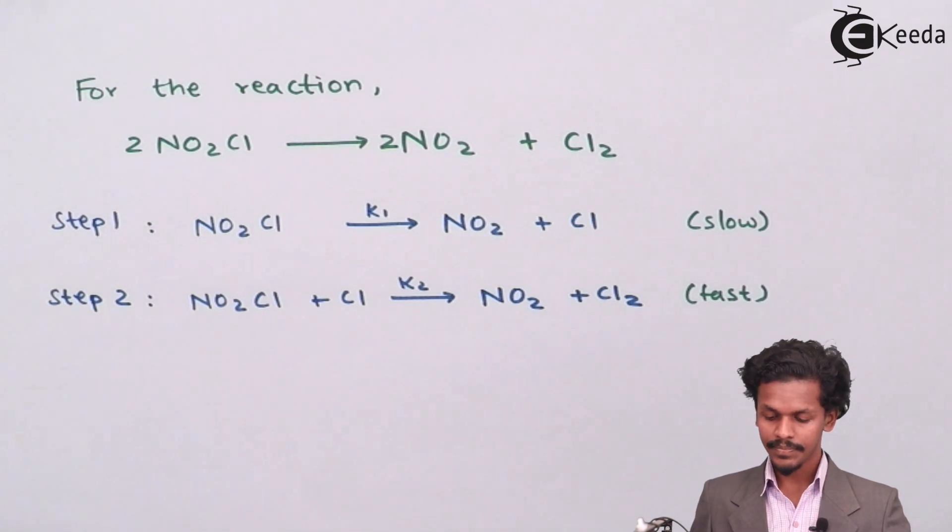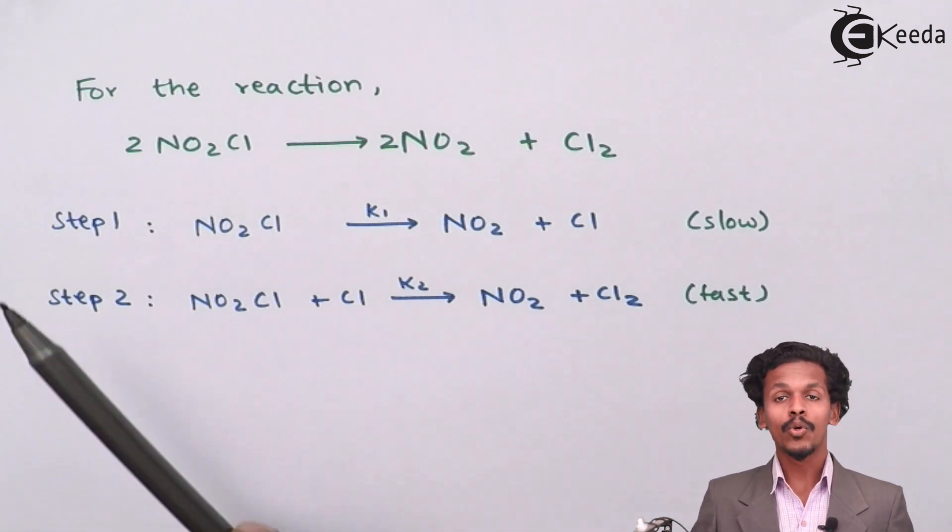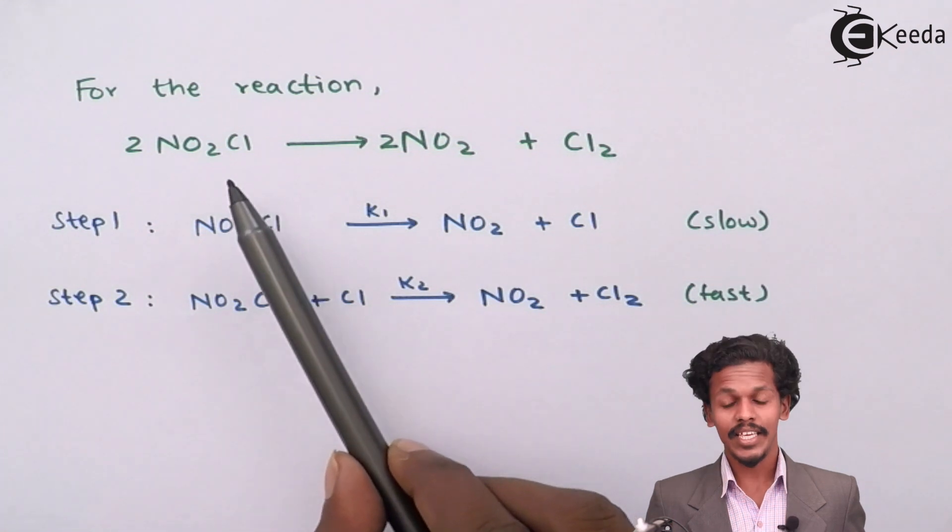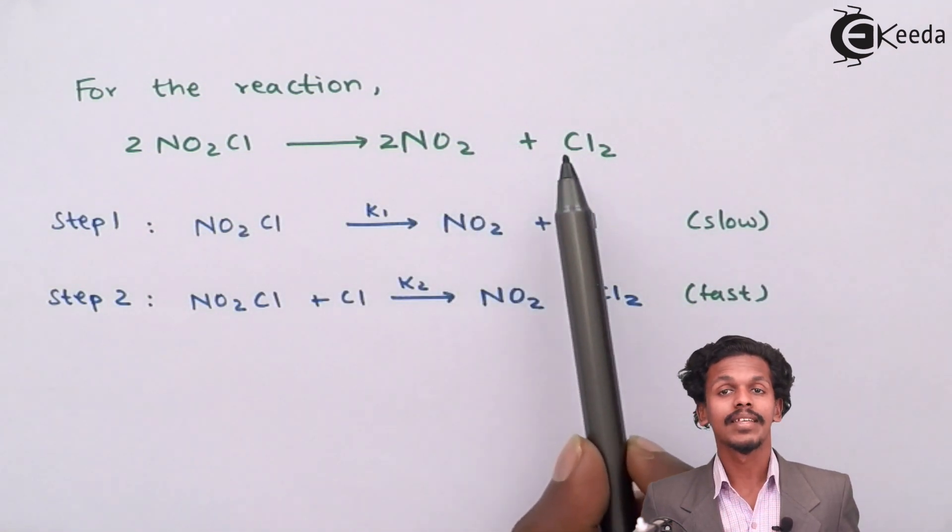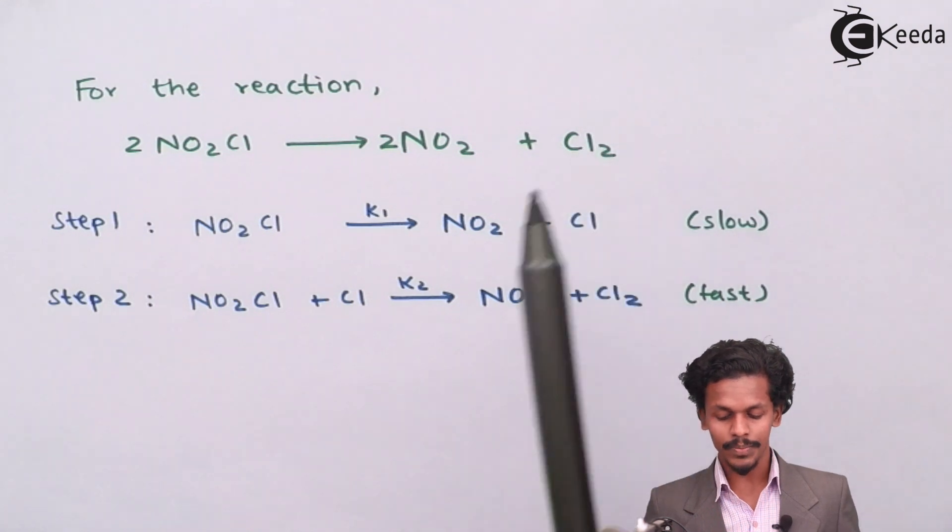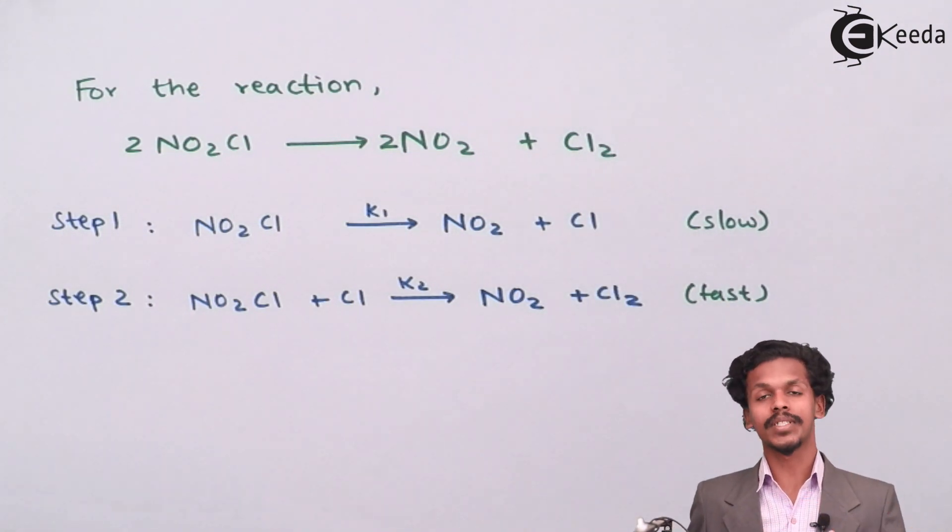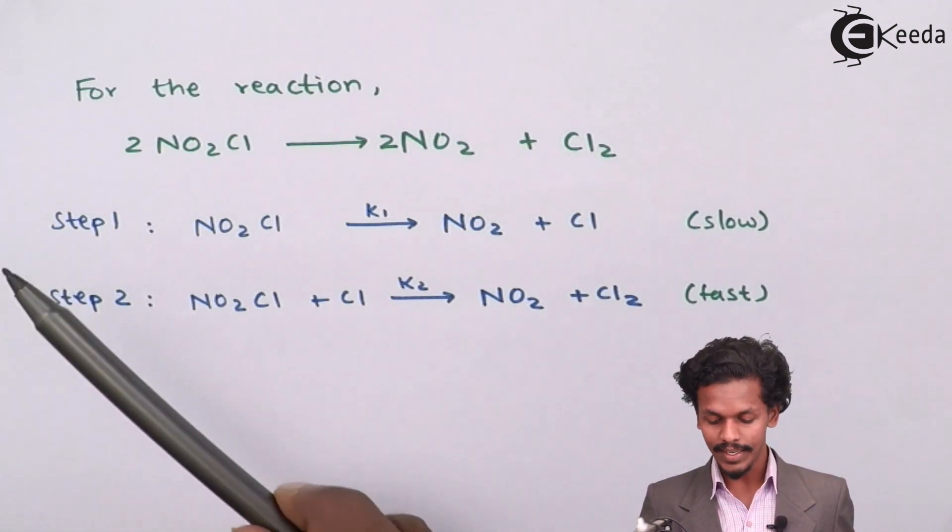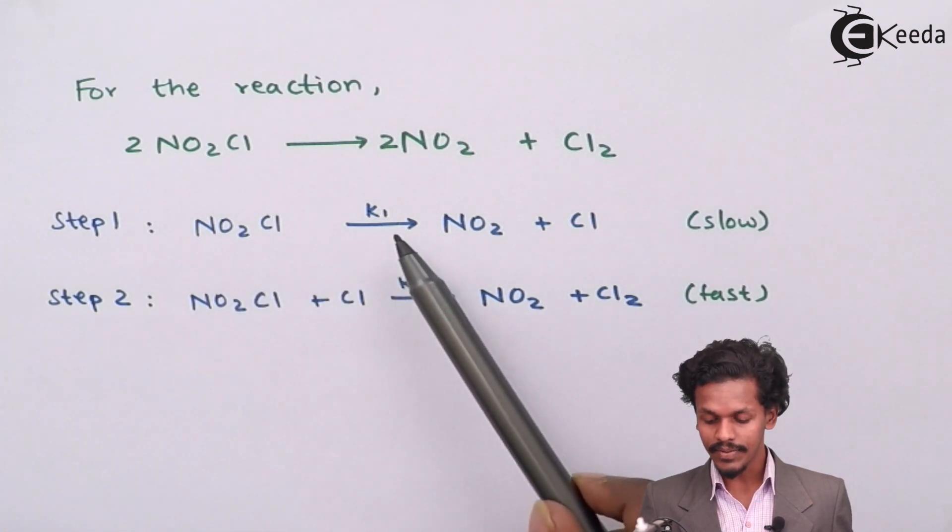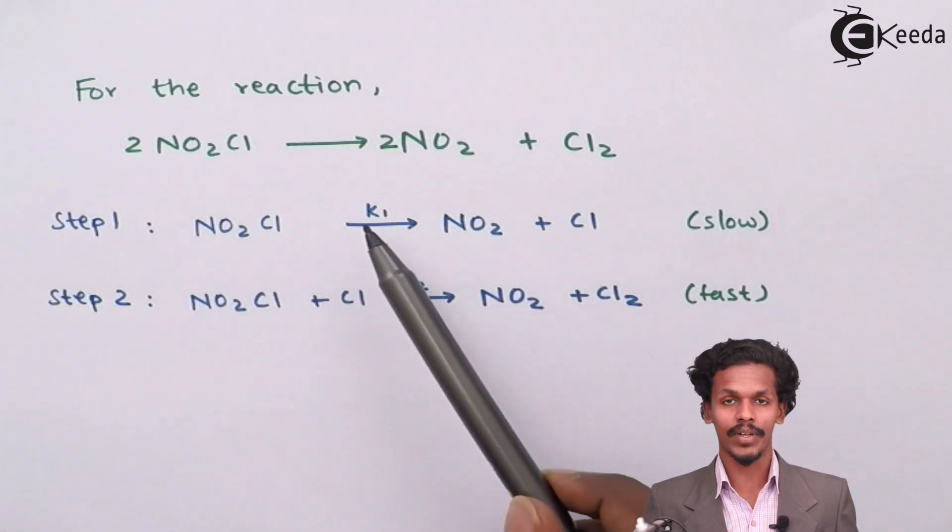That is when two times NO2Cl gives us two times NO2 plus chlorine molecule that is Cl2, it is followed by two steps. That is the step number one, NO2Cl that gives NO2 plus Cl with a rate constant of K1.